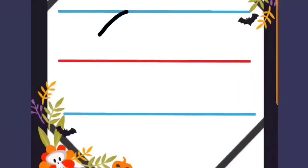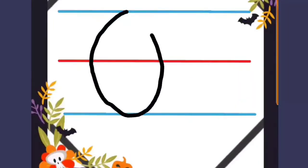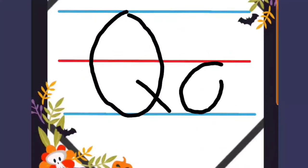For the letter Q, just make a big circle, just like the letter O, and draw a slant line. For the baby letter Q, draw a circle, and down, and check.